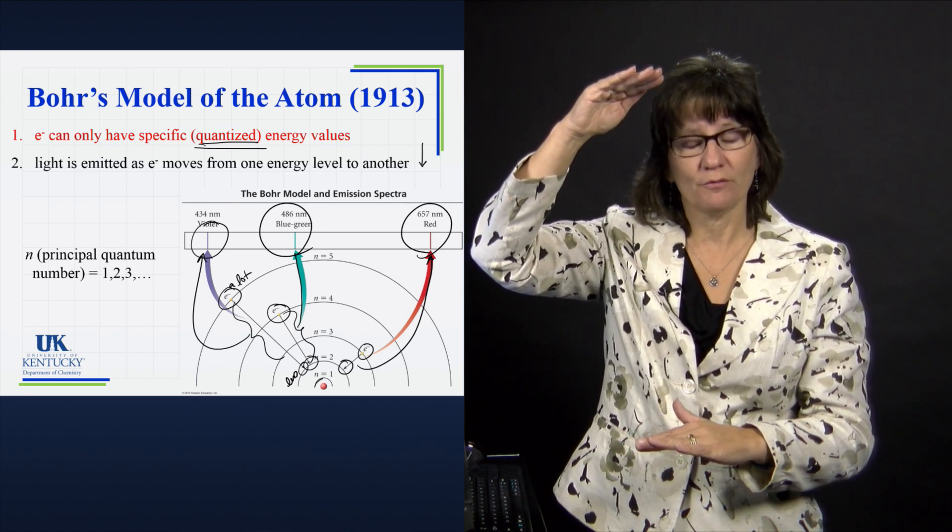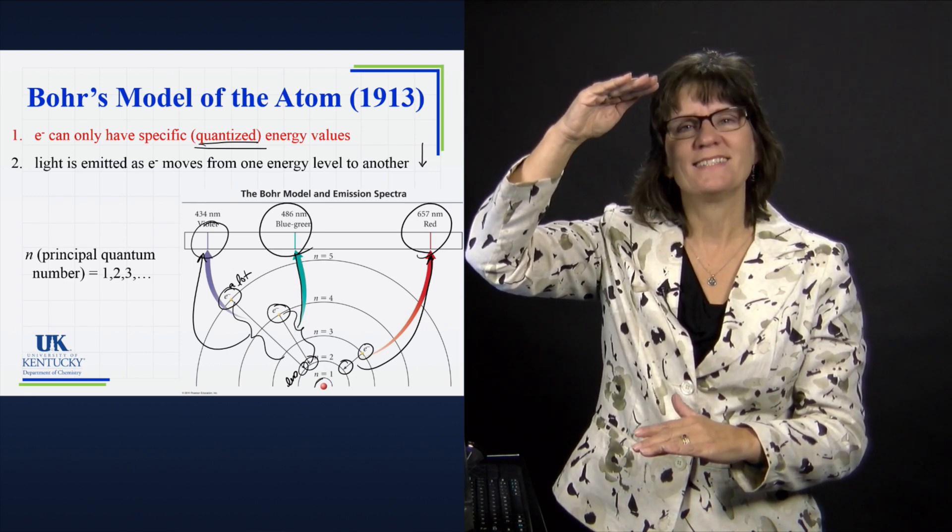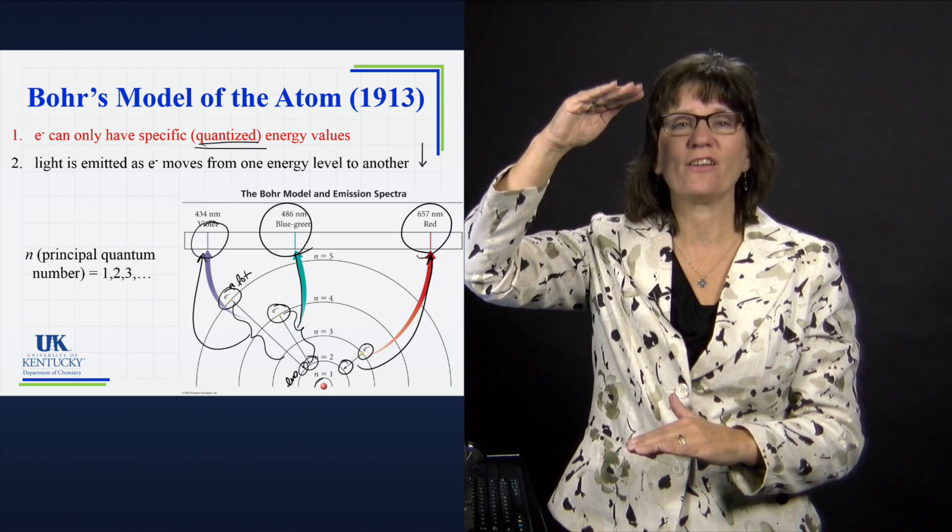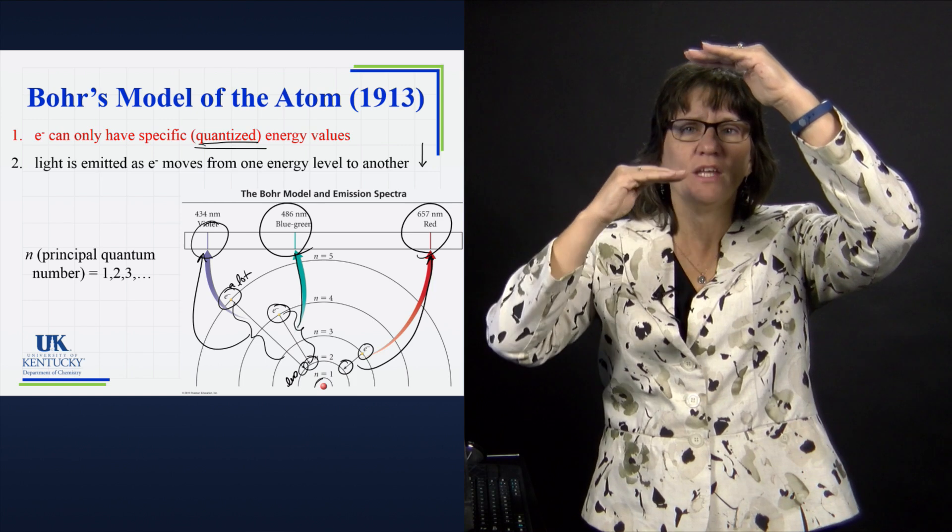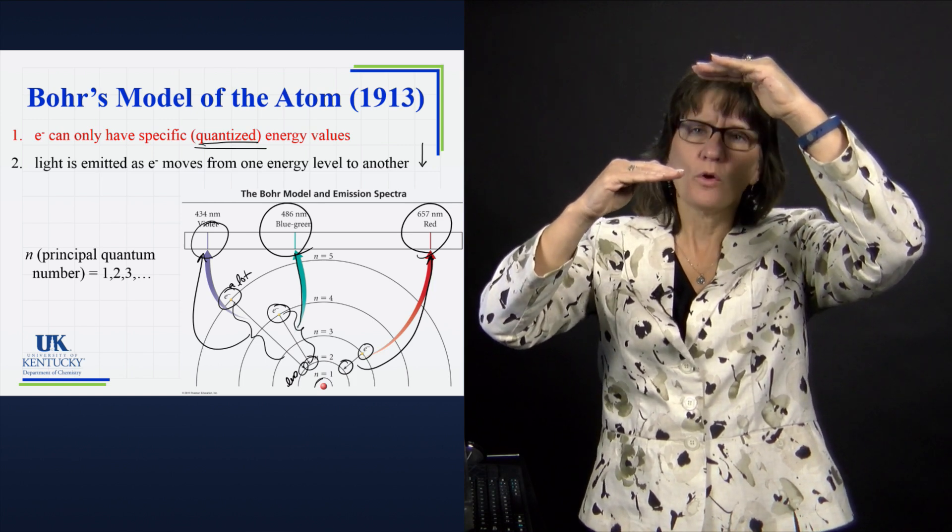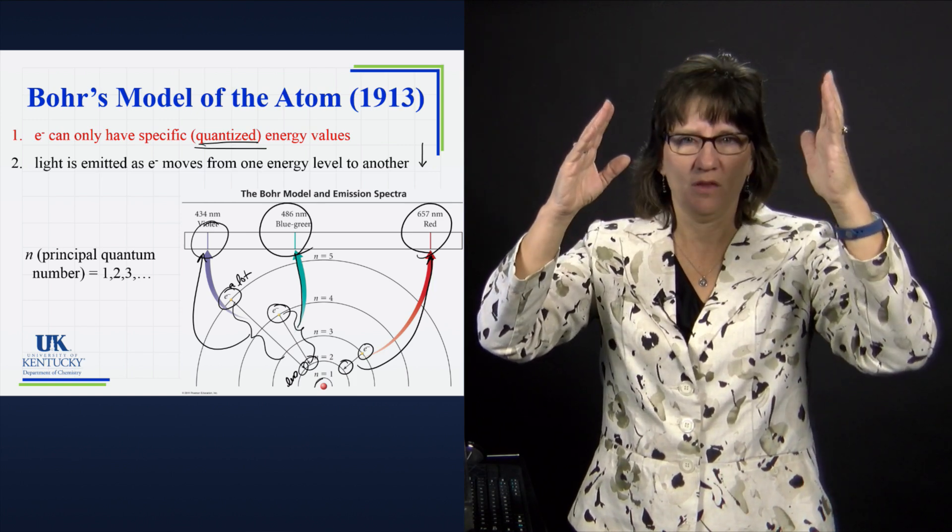Now if it goes from some upper level to the n equals 1, that's a bigger bunch of energy it has to get rid of. It's a higher energy photon and it falls outside our visible region. If it's somewhere up here and it goes to the n equals 3 state, that's a lower amount of energy and it doesn't fall within the visible region.